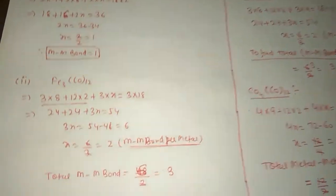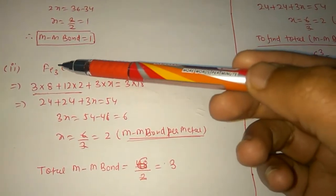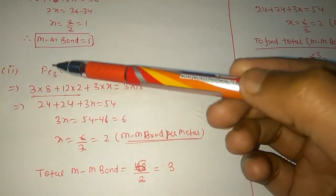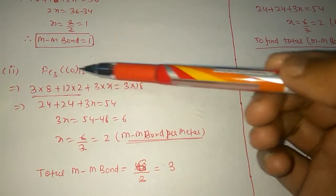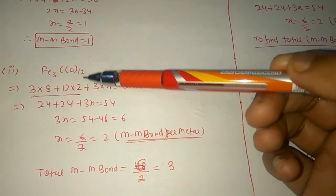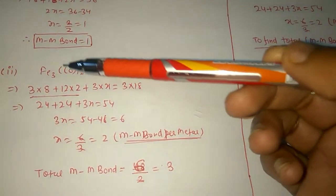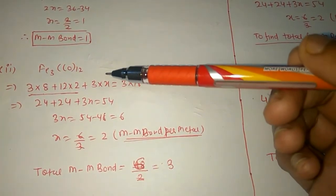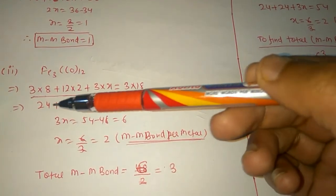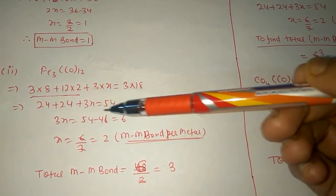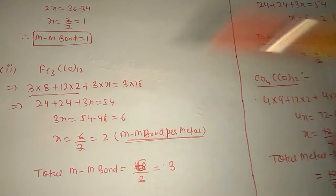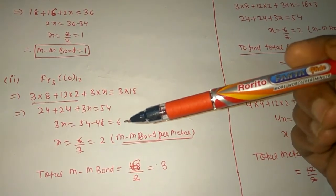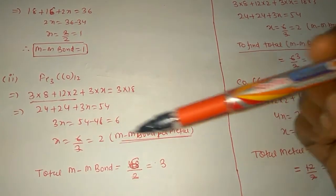For Fe₃(CO)₁₂: iron has 8 valence electrons. So: 3×8 + 12×2 + 3X = 3×18, giving 24 + 24 + 3X = 54, therefore 3X = 54 − 48 = 6, and X = 2. This is the number of metal-metal bonds per atom.